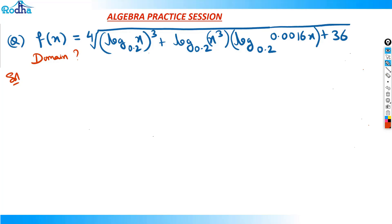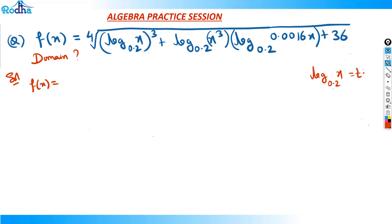So I can see that log x base 0.2 appears everywhere. I'll take log x base 0.2 as t. Once I substitute this, the first part becomes t³. By the property of log, since x³ has the argument cubed, the 3 comes out, making the second part 3t. For the third term, I can break it as log(0.0016) base 0.2 plus log x base 0.2.